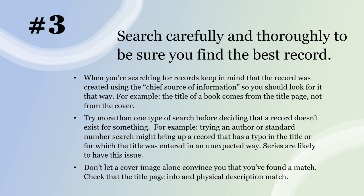An author or standard number search might bring up a record that has a typo in the title which you missed, but you can still use that record because you can fix the typo — remember, you're adapting somebody else's cataloging record to your system. Series are very likely to have titles entered differently by different people, so search thoroughly before deciding on a record. A cover image alone shouldn't convince you you've found a match — check the title page info and physical description. Cover images in catalogs are generated strictly based on ISBN, so it's easy to have the wrong cover displaying if the ISBN is off by one digit.